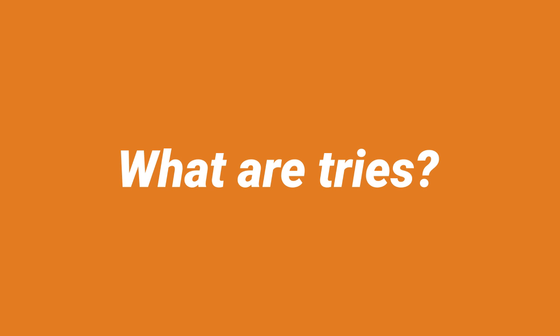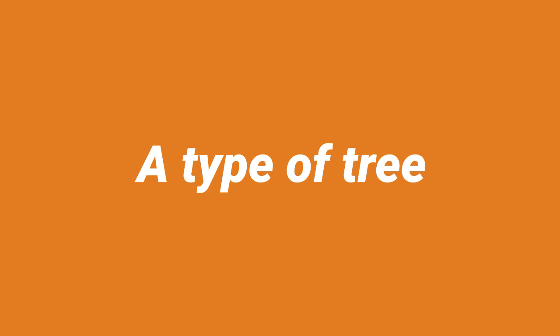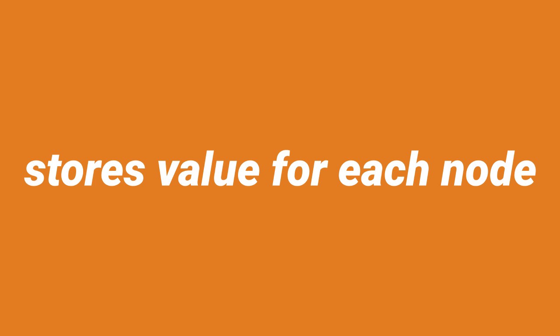What are tries? A trie, sometimes pronounced tree, is a type of tree that stores the value for each node based on its position in the trie.